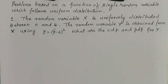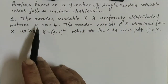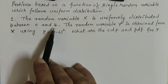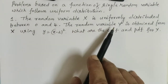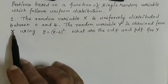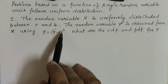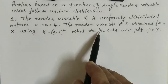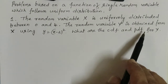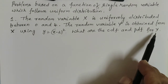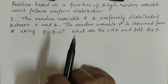Dear students, in this session we will discuss problems based on a function of a single random variable which follows uniform distribution. The random variable X is uniformly distributed between 0 to 4. The random variable Y is obtained from X using the relation Y = (X - 2)². What are the cumulative distribution function and probability density function for the random variable Y, which is a function of the random variable X?